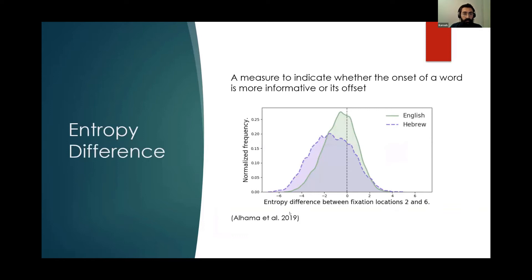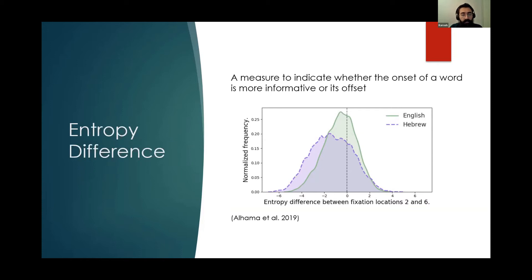They use this to come up with the concept of entropy difference. Entropy difference tells you where to look — what letter position to look at in a word in order to extract the most information and reduce uncertainty as much as possible. If a word has a high entropy difference, we should probably fixate towards the end of the word. If it has a low entropy difference, fixate towards the beginning. And if a word has an entropy difference of zero, fixate towards the middle. For English, the most frequent entropy difference is zero, which explains why English readers fixate towards the middle. For Hebrew, it's around negative two, explaining why they fixate towards the beginning of the word.